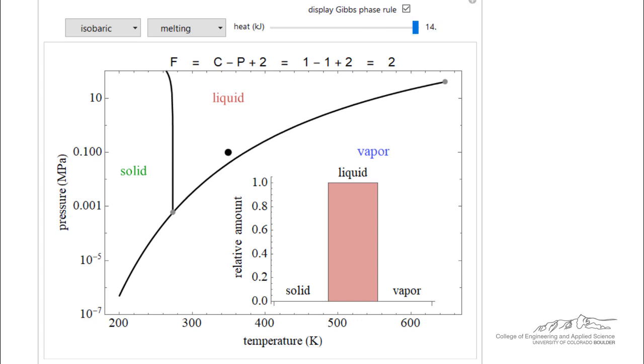The important point here is that we understand how the phase rule applies, and we understand the behavior that adding heat does not necessarily change the temperature when we hit one of these phase dividing lines that separate liquid from vapor, or solid from liquid, or solid from vapor.